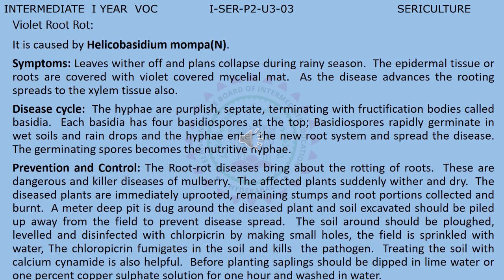Coming to another fungal disease, the violet root rot — it is caused by Helicobasidium mompa. The symptoms are: leaves wither off and plants collapse during the rainy season. The epidermal tissue of roots are covered with a violet-coloured mycelial mat. As the disease advances, the rotting spreads to the xylem tissue also.